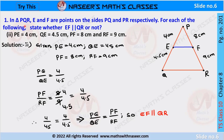We have another triangle PQR with measurements: PE is equal to 4 cm, QE is equal to 4.5 cm, PF is equal to 8 cm, and RF is equal to 9 cm. To check whether EF is parallel to QR, we find the ratios of the corresponding sides. PE by EQ is written as 4 by 4.5. The other ratio PF by RF is written as 8 by 9, which after cancellation also gives 4 by 4.5.